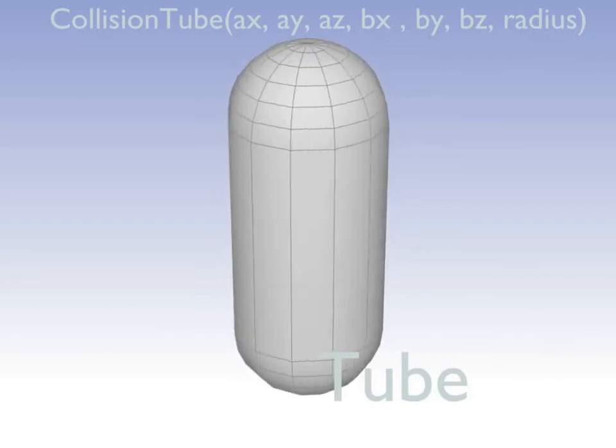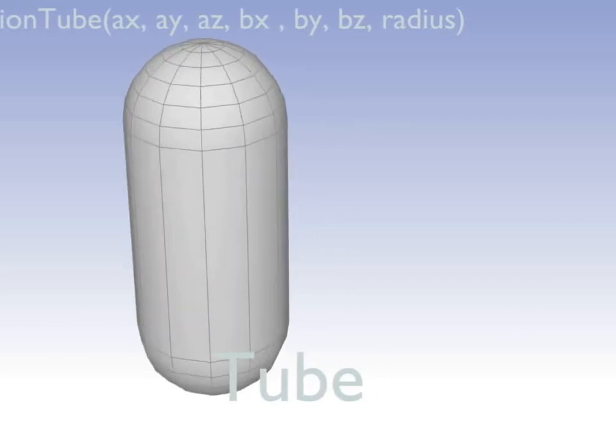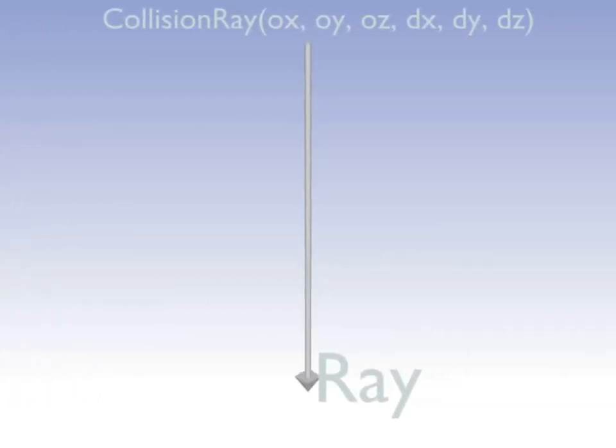Ray is a collision solid that has no volume. It's just a ray which starts at some point and extends in some direction to infinity. It's useful for keeping your character on the ground by attaching a ray to the player and shooting it down. It's also useful to move objects with the mouse by putting a ray on the position of the mouse cursor and aiming it at the front of the camera.